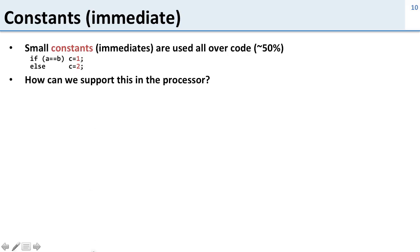So how can we support this in the processor? Well, the most obvious way to support small constants is to put them in memory and load them. This is okay, but it means every time you want to use one of those constants you have to go load it from memory. And we talked about before: because memory is so big, it's also very slow.